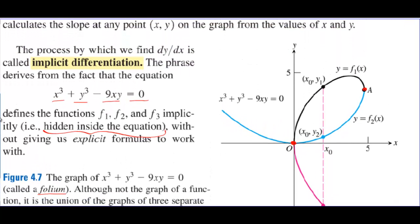It's not a function because it fails the vertical line test, and when you have something that fails the vertical line test, it's a lot harder to take the derivative. In other words, you can't get y by itself. How would we get y by itself when there are two separate y's? We could subtract x³ and factor out y, but that would still leave a y² - 9x. This is very difficult, if not impossible, to isolate y. So we take the derivative with respect to x implicitly.